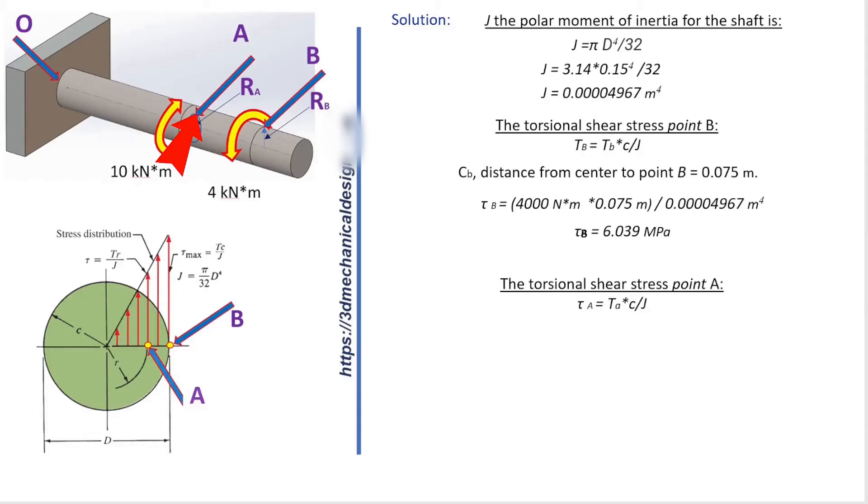Tau A equals TA times C divided by J. Tau A equals 10 minus 4 equals 6 kilonewton per meter.